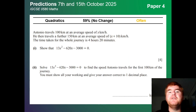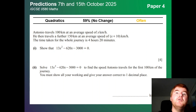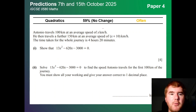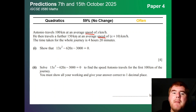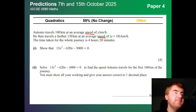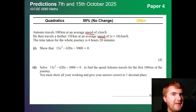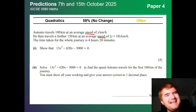Quadratics — no change at 59%. It's still reasonably often, but they like to put it in the context of another question. For example, a speed-distance-time question where a quadratic comes out of it. They can also do this in geometric questions where you work with areas in terms of x, so watch how they sneak in these quadratics.